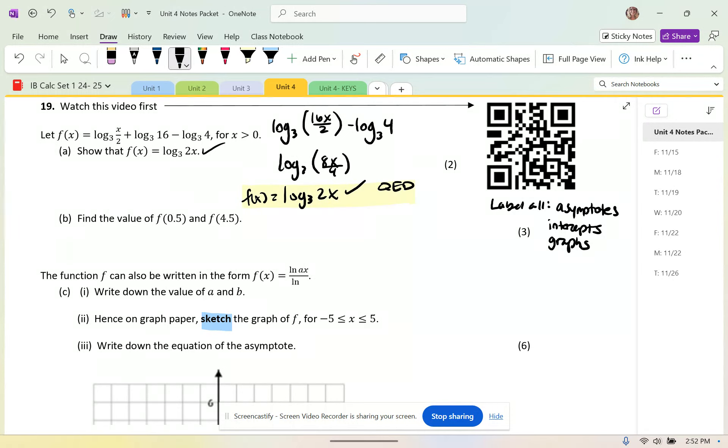And then I'm trying to find the value of f of 1 half and f of 4.5. This is without a calculator, so I'm going to change them into improper fractions, and then I now have f of 1 half is equal to log base 3 of 2 times 1 half, which is going to end up being log base 3 of 1, which is equal to 0. So f of 1 half equals 0.